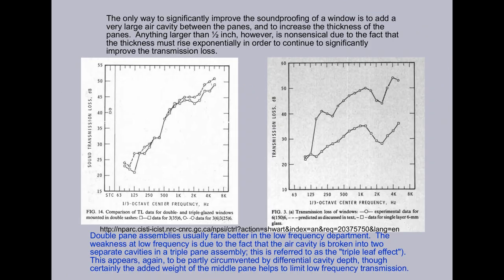The only way to significantly improve the soundproofing of a window is to add a very large air cavity between the panes, and to increase the thickness of the panes. Anything larger than a half inch, however, is nonsensical due to the fact that thickness must rise exponentially in order to continue to significantly improve the transmission loss.